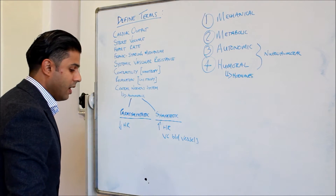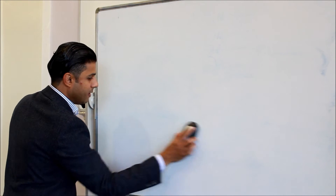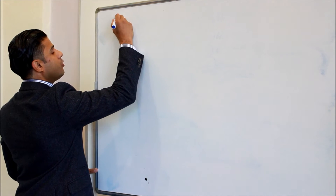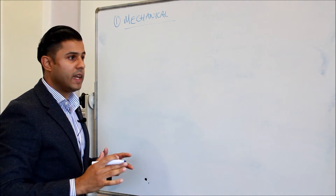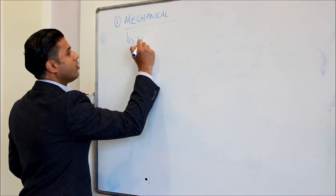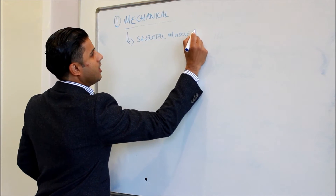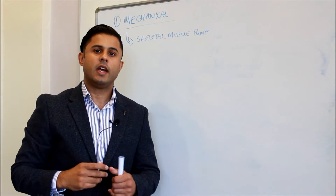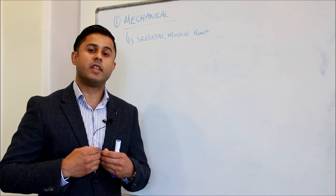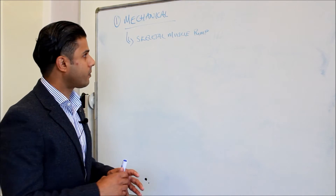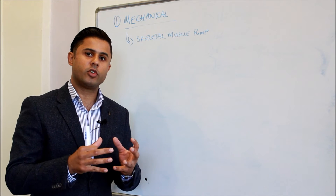We're going to talk through each of these briefly. I'm going to wipe the board and go first with the mechanical change. In terms of the mechanical change, the easiest mechanism to understand is the skeletal muscle pump — you've probably heard about this from GCSE PE or biology. Essentially, it's a series of muscle contractions, particularly in the lower legs and lower extremities, which propel blood in the veins against gravity up towards the right atrium, increasing venous return. Veins have valves to prevent backflow.